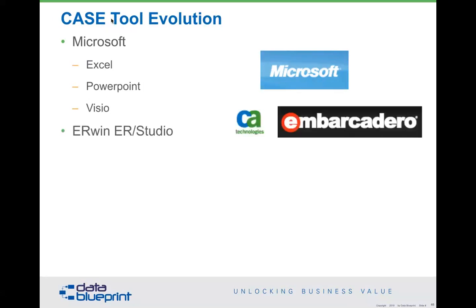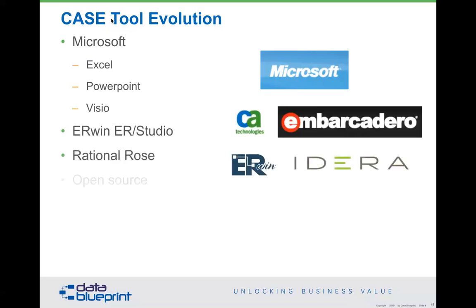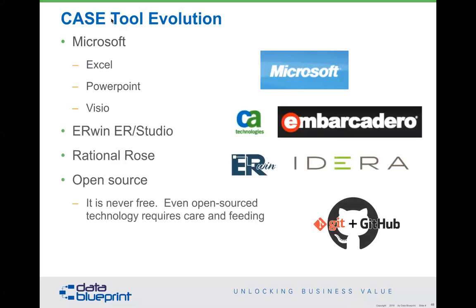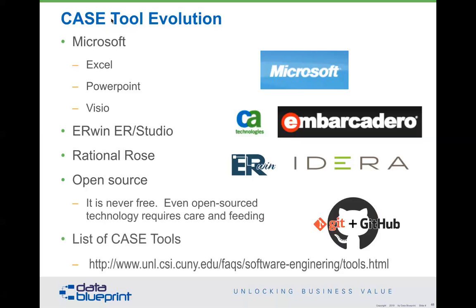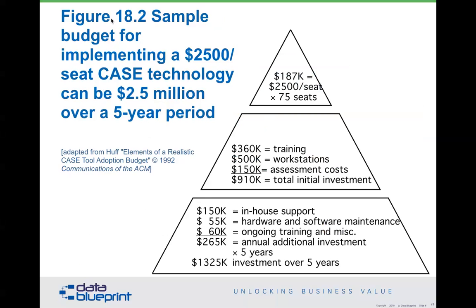It used to be that ERWin and ERStudio were big players in the market. Rational Rose then came along because they were giving it away to colleges and universities. Now both companies have been reborn as IDERA and ERWin. There are very good product offerings on the market, plus open source — just remember that open source is never free, it needs its own care and feeding. Another problem with CASE tools is that they cost per seat: $2,500 a seat times 75 seats adds up to about a $2.5 million investment by the time you add all the workflow into it.